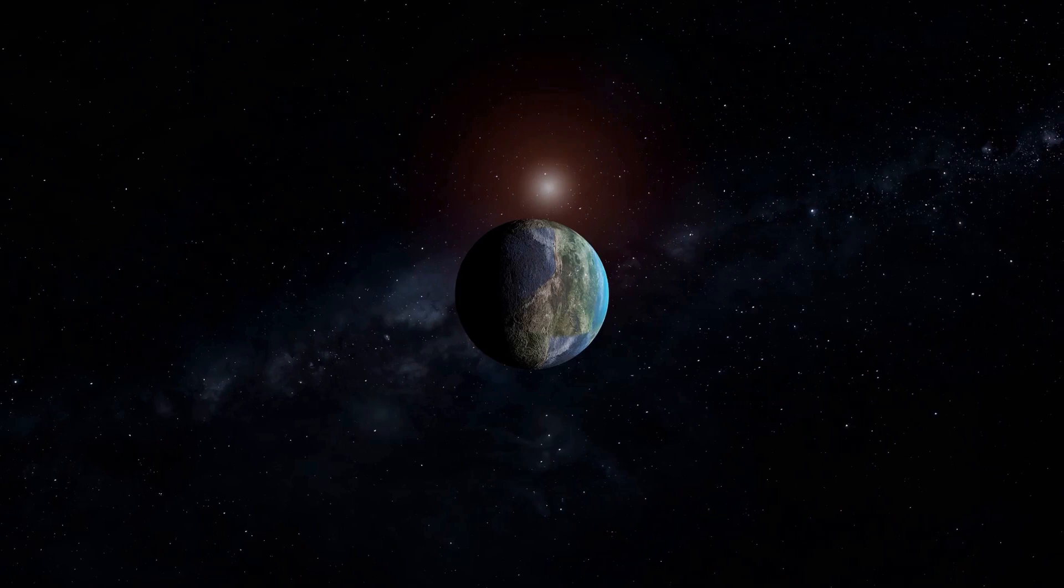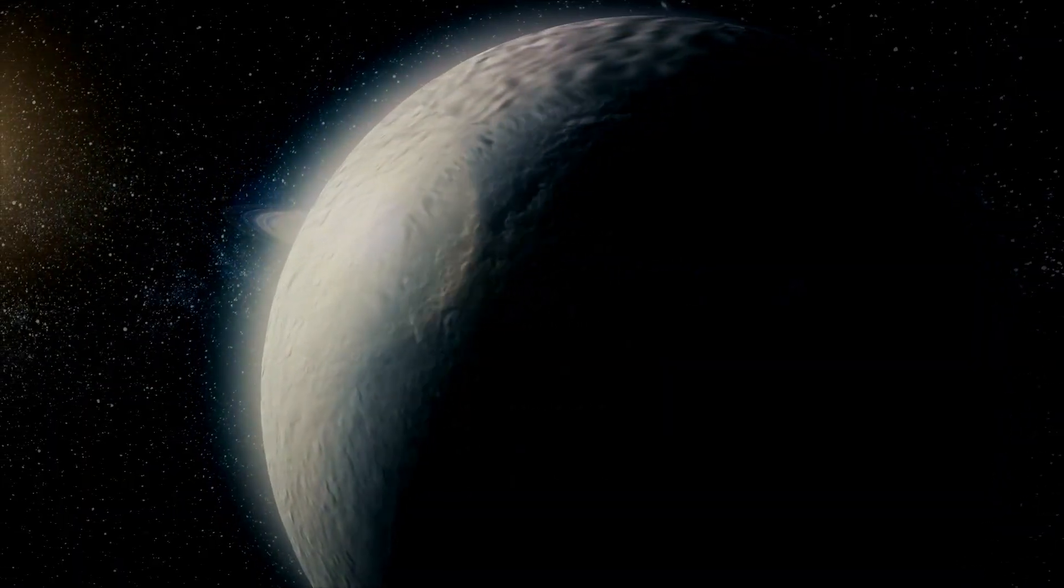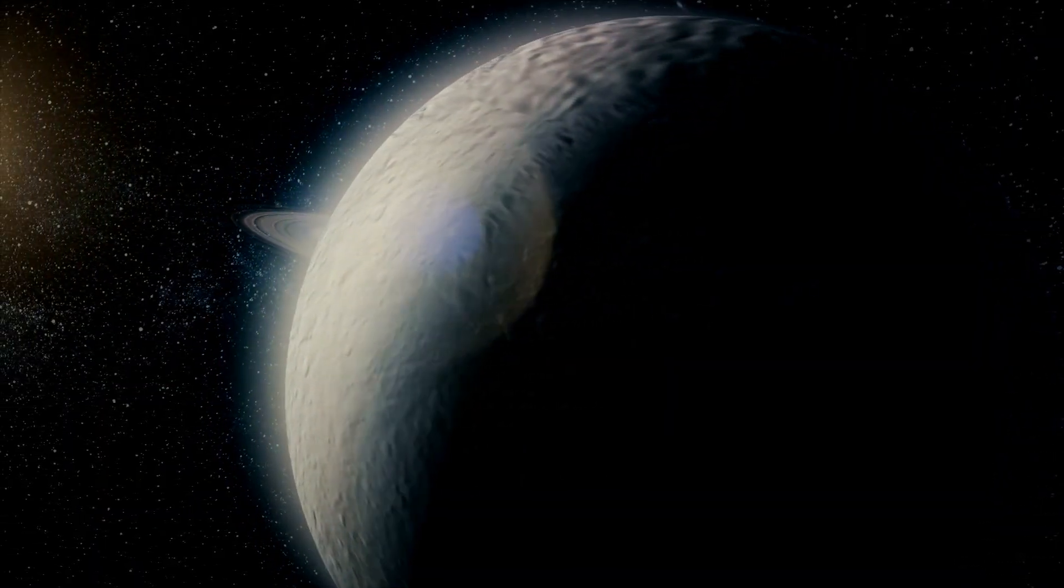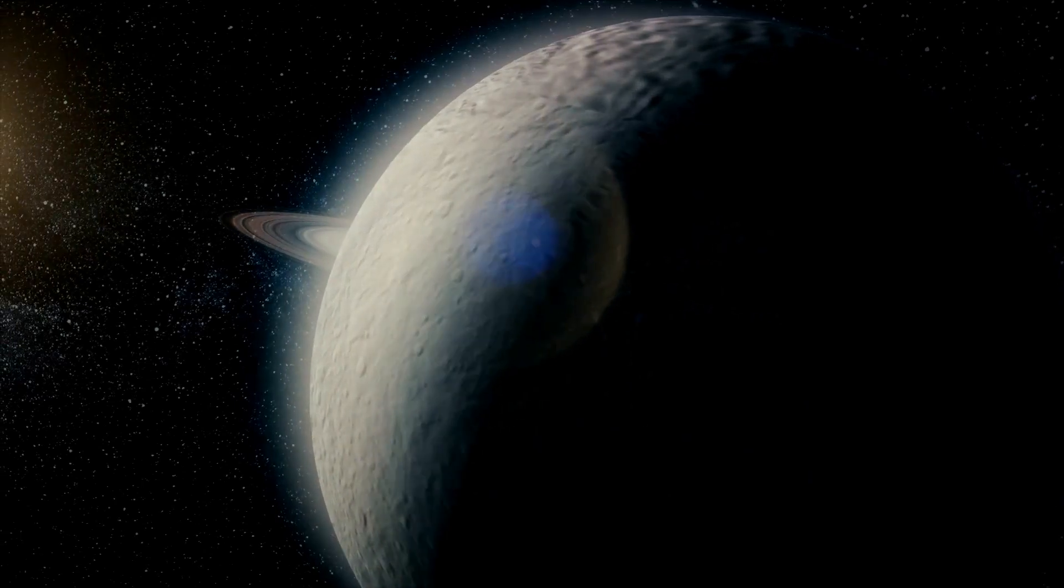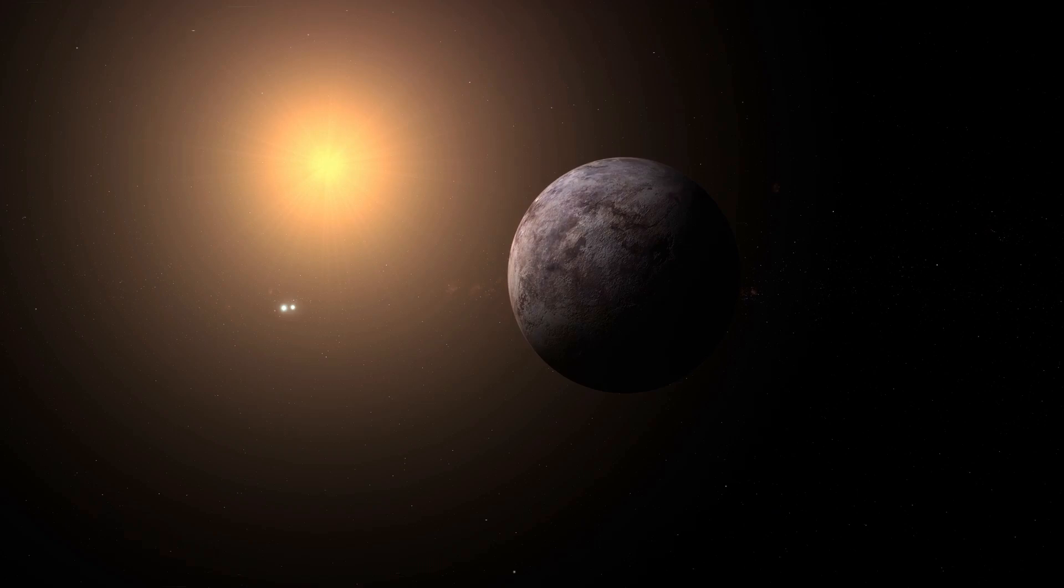An exoplanet or extrasolar planet is a planet that orbits a star outside our solar system. These celestial bodies are too far away for us to observe directly, making their discovery and study a challenging but fascinating endeavor. Now back to LHS 475 b.